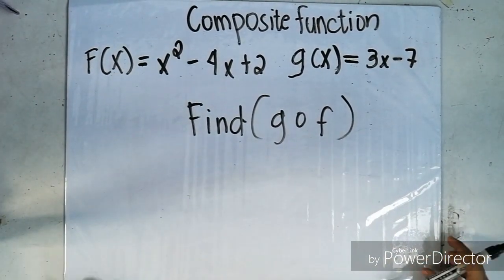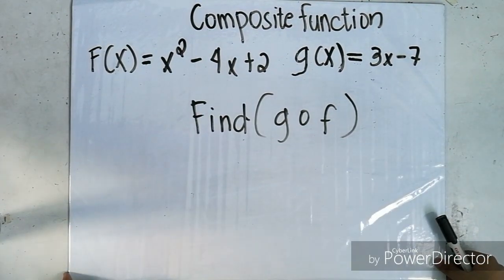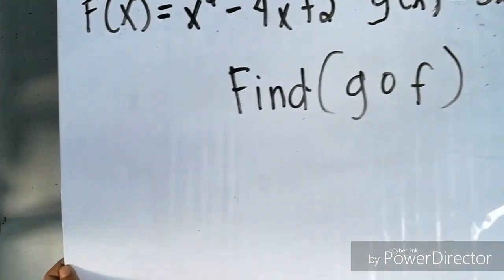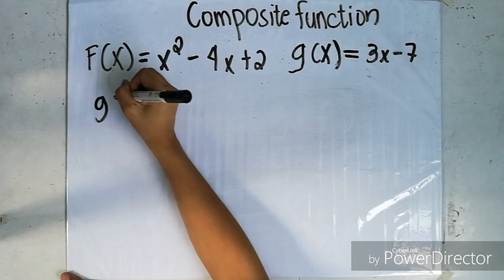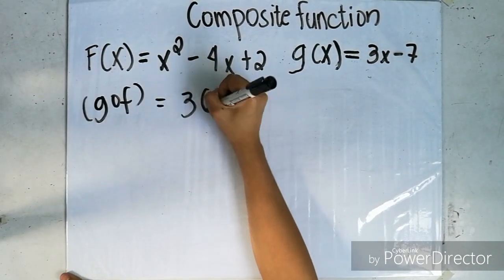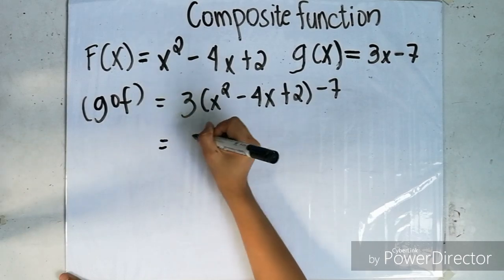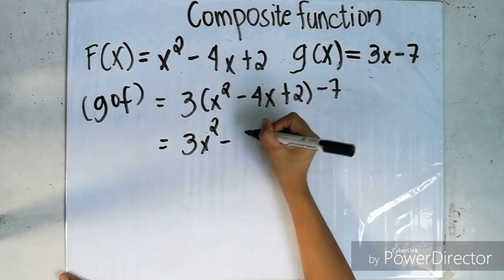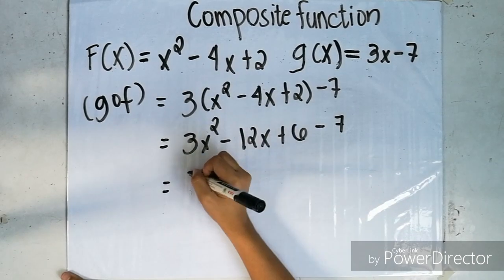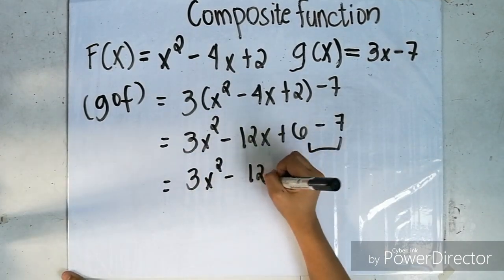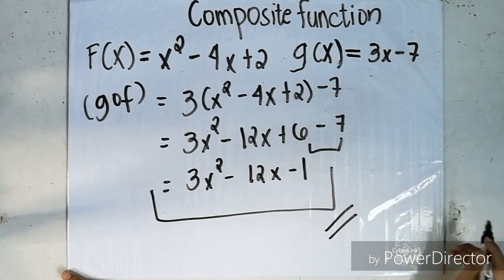The next example: f(x) = x squared minus 4x plus 2 and g(x) = 3x minus 7. Find g composite of f. Since g equals 3x minus 7 on the outside and f is inside g, substitute into 3 times the quantity x squared minus 4x plus 2, minus 7. So 3x squared minus 12x plus 6 minus 7 equals 3x squared minus 12x minus 1. That is the final answer.